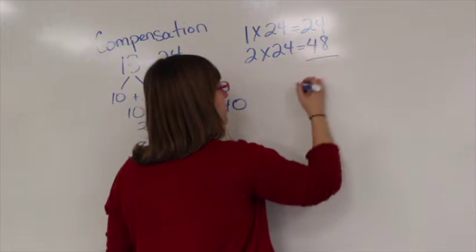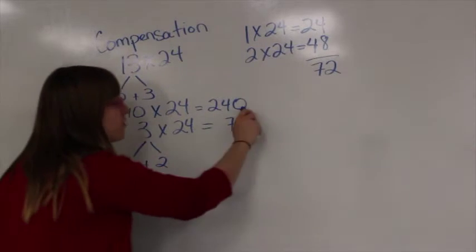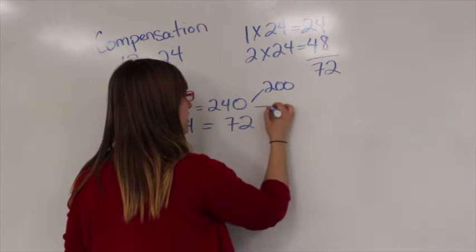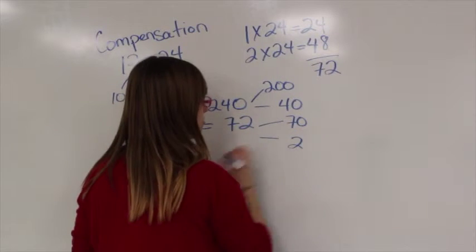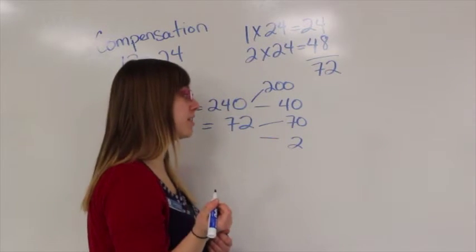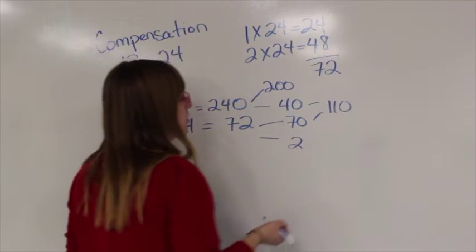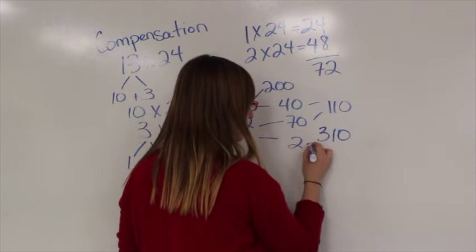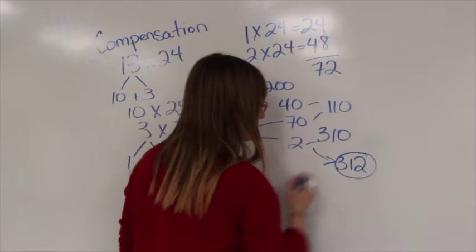So I know that if I add them together, it's going to be 72. If I add 240 to 72, I can split it up into 200 and 40, 70 and 2. 40 plus 70, you can think of as 7 and 4, which makes 11. So if you put on another 0 on there, you're going to have 110. 200 plus 110 is 310. Add on another 2 and you're going to end up with 312, which is our answer.